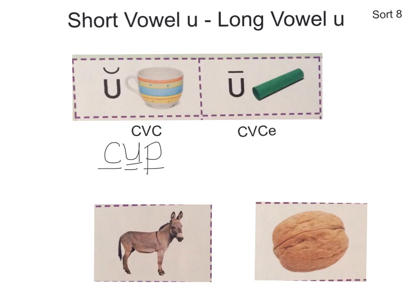Our next example is the word 'tube.' And 'tube' is spelled T-U-B-E. In 'tube,' which makes the long U sound and says its own name 'u,' we have a consonant, vowel, a consonant with the E at the end, which makes the U long.